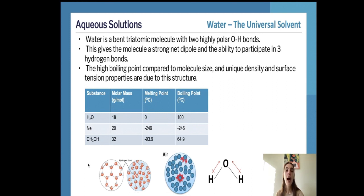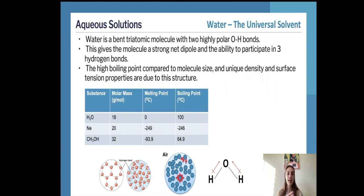The high boiling point of water compared to its molecule size, and its unique density and surface tension properties, are due to this hydrogen bond web-like structure. Surface tension refers to this structure providing a tensile surface on which objects can balance — such as when you see a leaf floating on water, that is due to surface tension.